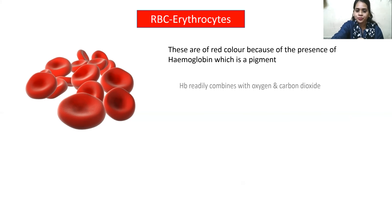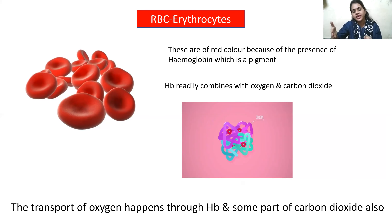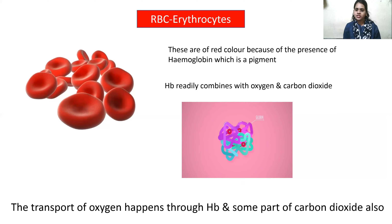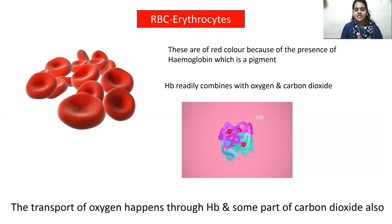Hemoglobin also helps in the transportation of oxygen as well as carbon dioxide. Hemoglobin combines with oxygen — you can see in the image how hemoglobin is attracting oxygen towards it. Hemoglobin combines with oxygen and forms oxyhemoglobin, and this oxyhemoglobin gets transported in our body. So oxygen in our body gets transported in the form of oxyhemoglobin. RBCs help in the transportation of various gases like oxygen and a small amount of carbon dioxide.